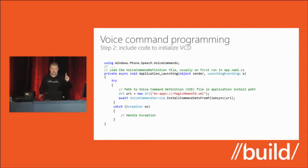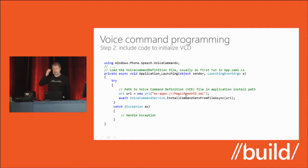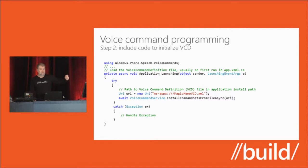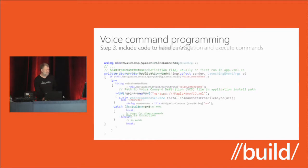That was step one. Let's look at step two: you have to initialize the VCD file from within your application — generally on first run. We have a static class, VoiceCommandService. All you do is pass the URI of your installed VCD file to InstallCommandSetsFromFileAsync. I recommend putting it inside a try-catch block to catch any compile-time errors. We also provide good error messages in the catch block — I believe they even include line numbers of where the errors occurred.